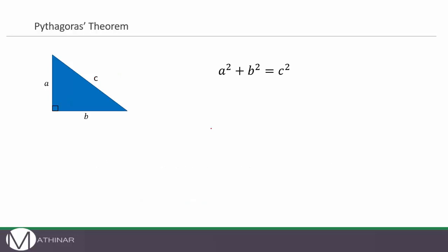This is Pythagoras' Theorem. Pythagoras' Theorem states that A squared plus B squared equals C squared. So there's your C opposite the right angle and A and B elsewhere.